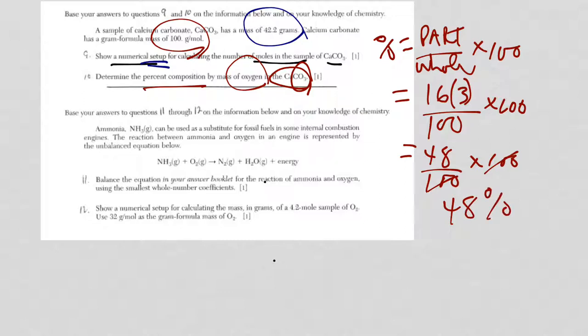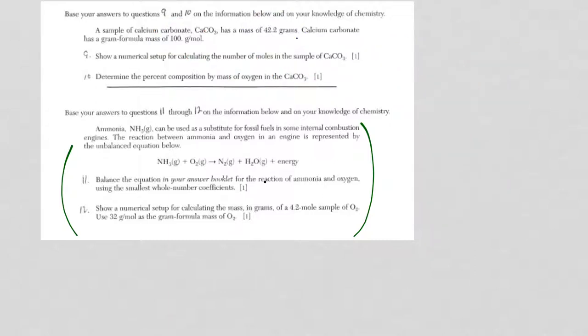For number 11 and 12, we're using the information down here. In number 11, we have to balance the equation for ammonia and oxygen using the smallest whole numbers. I'm going to rewrite it.